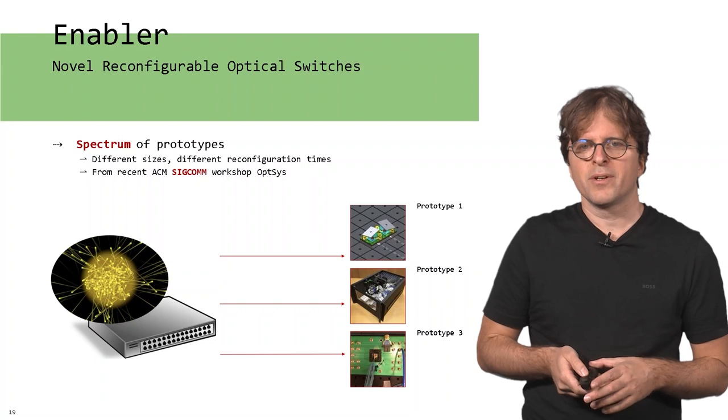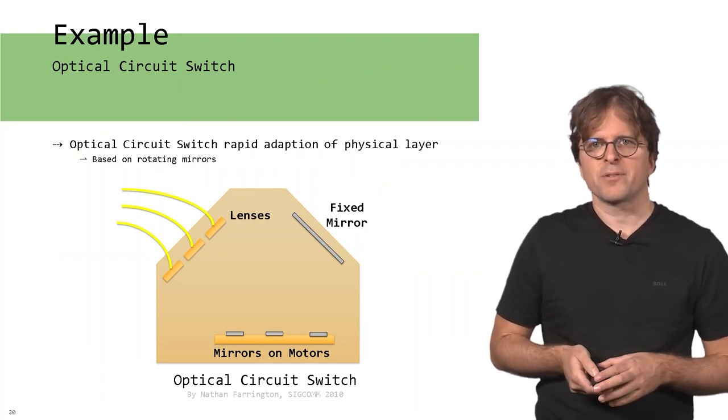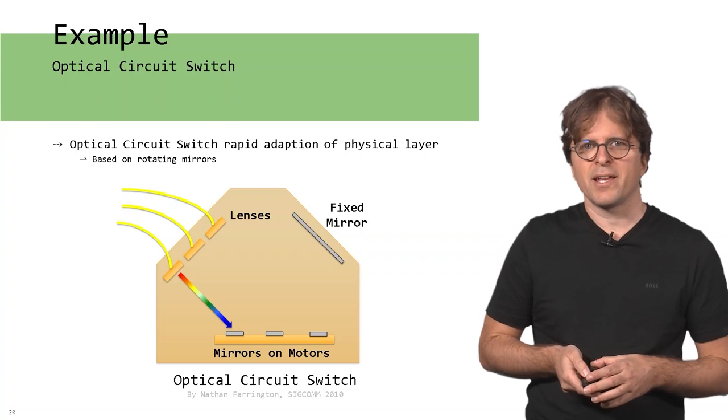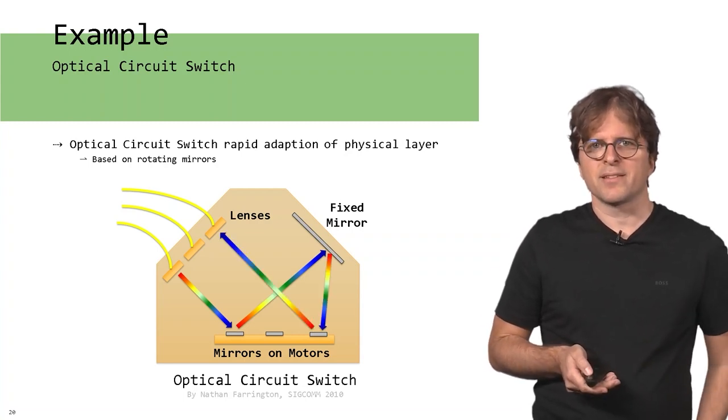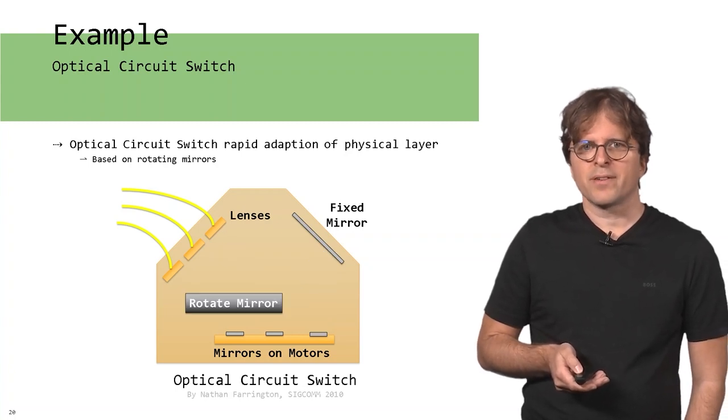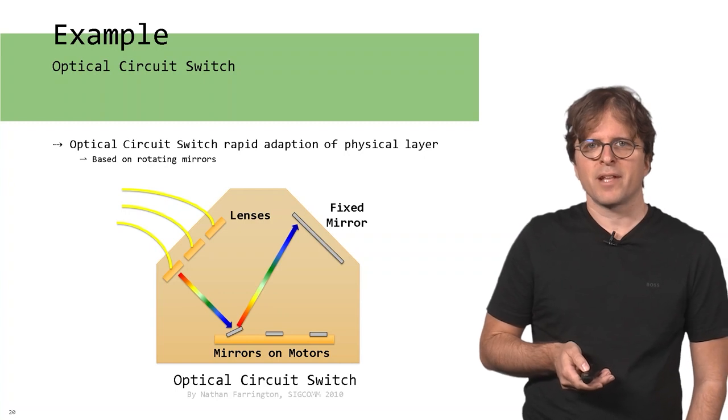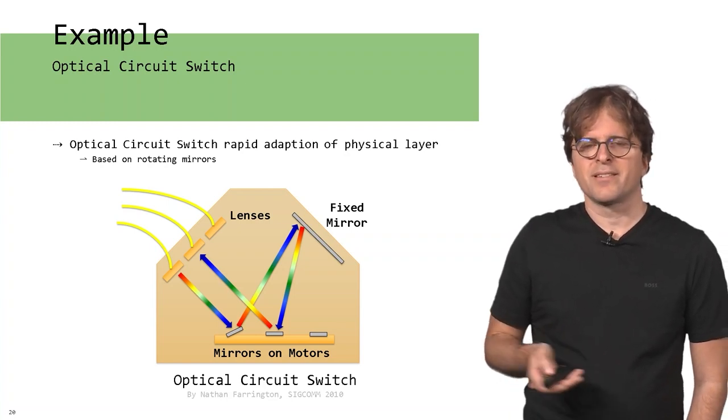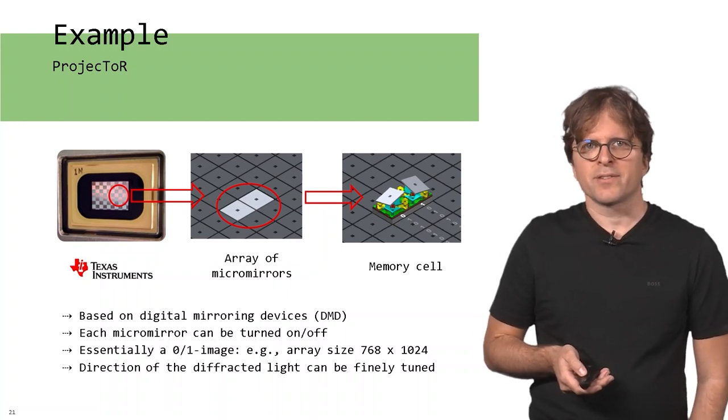I want to show you two concrete technologies in more detail. One is the optical circuit switch that allows for rapid adaptation of the physical layer. It's based on mirrors that can rotate. This is an OCS switch. If you have light coming in from this lower port, currently if it's configured like this, it will be reflected here and then like that, and exits at the upper port. Now if you rotate the mirror in this OCS like that, if light comes in like this, it goes up there, will be reflected like this, and now it goes out at the middle port. By changing the orientation of the mirrors, the light will go in a different path and provide a different interconnect.